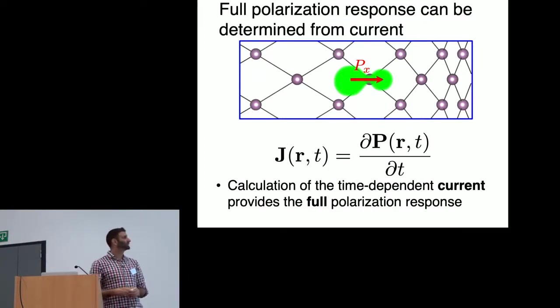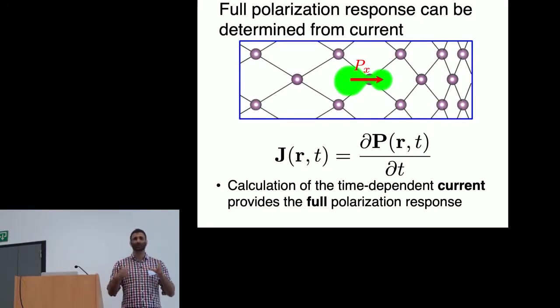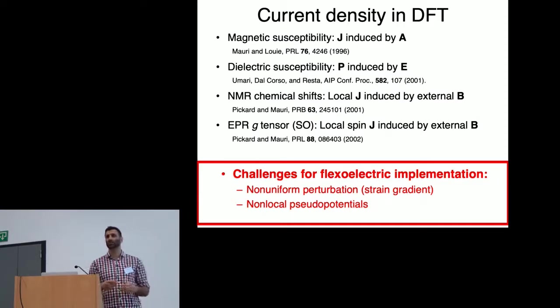So if we want the full polarization response, one place where we can look is in the current density that's induced by the atomic deformations. Of course, the current density contains all the information about the polarization. But it's related classically to this time derivative of the polarization. There have been a variety of implementations to calculate the current density in various forms in the past, including magnetic and dielectric susceptibility and also things like NMR chemical shifts and components of the G tensor.